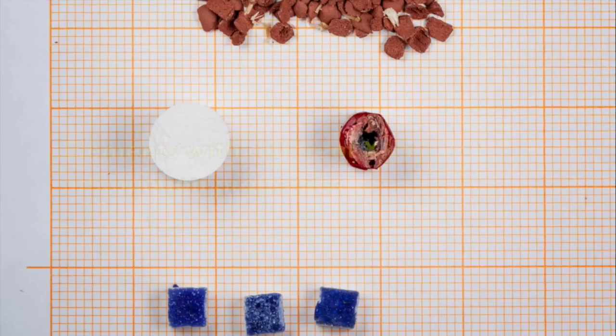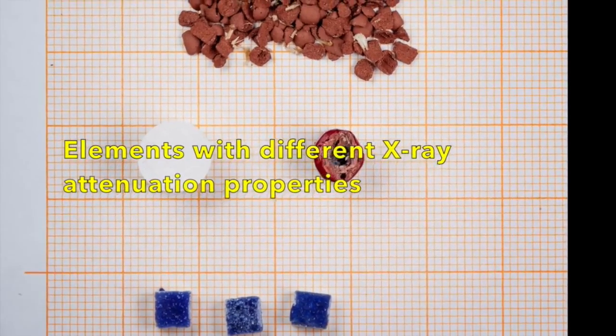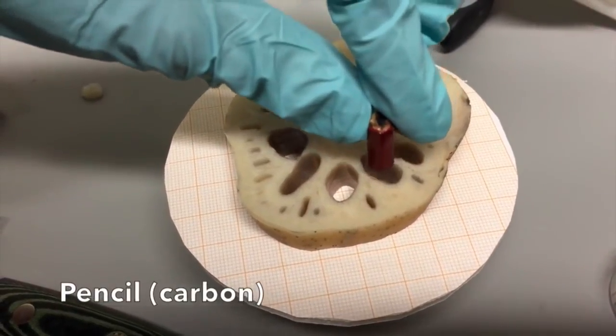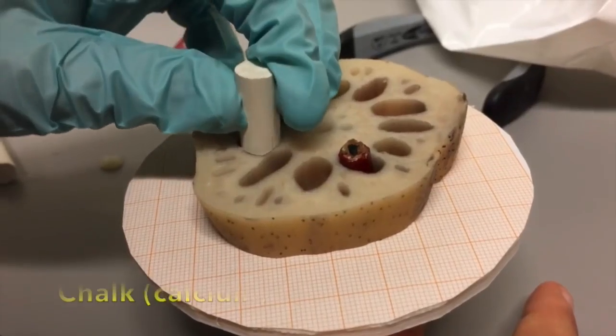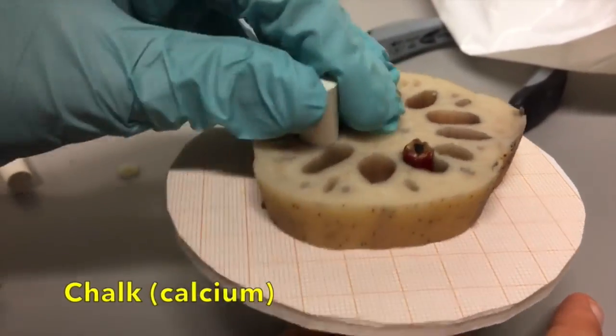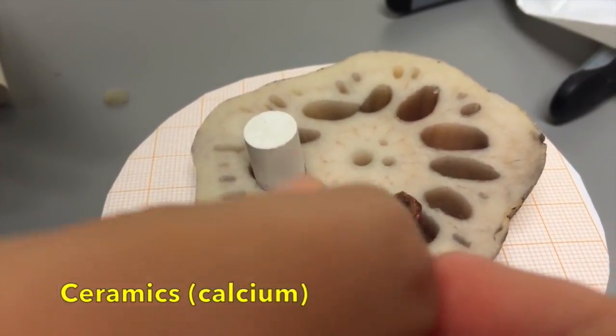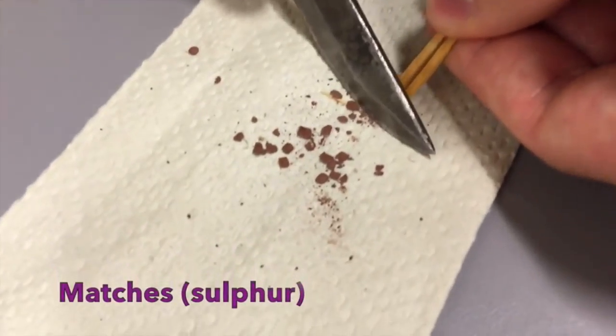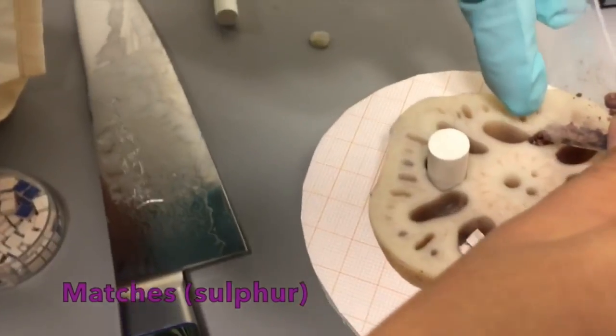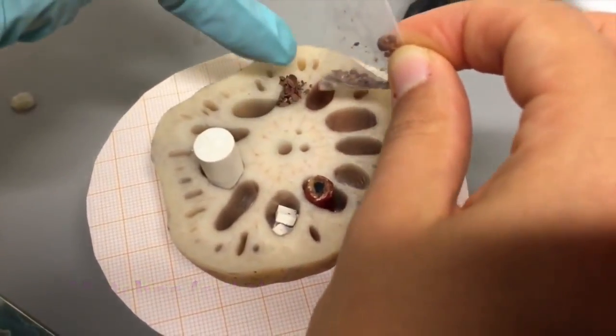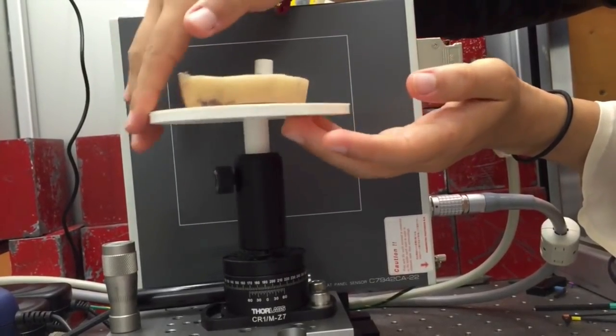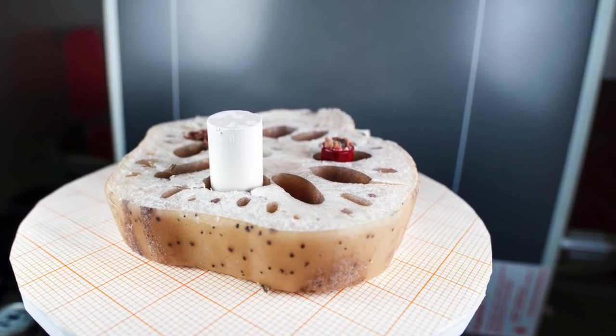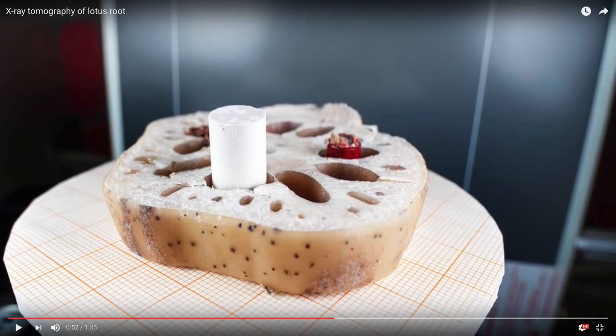So you need to pick up some kind of phantom, we will have some options for you later. There needs to be some contrast in the x-ray accumulation, in whatever you choose. Then you need to enter it inside the machine.